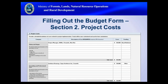All applications must include a completed budget form using the Rural Dividend fifth intake budget form available on the website. All information in the budget form must match the information in the application and supporting documents — for example, the funding request in the budget form must match the funding request in the application form. Section 1 details your organization name, project name, and funding stream selection. Section 2 provides a detailed breakdown of all project costs and their funding source.